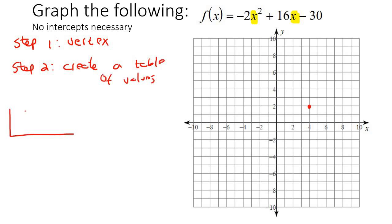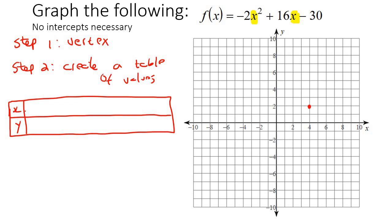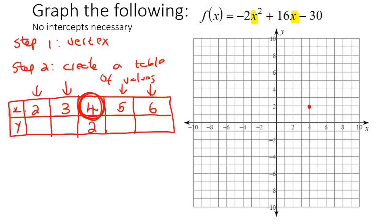So what you're going to do is make a little table with x and y, and make 5 spots. In the middle, put the vertex x value — which is 4. Then choose the x value that is 1 less, and then 1 more. Then let this one be 2 less — so that's 2 — and then 2 more — so that's 6. Now you can either choose to do the 5 and the 6, or you can choose to do the 2 and the 3. But don't do all of them; it's just going to waste your time.